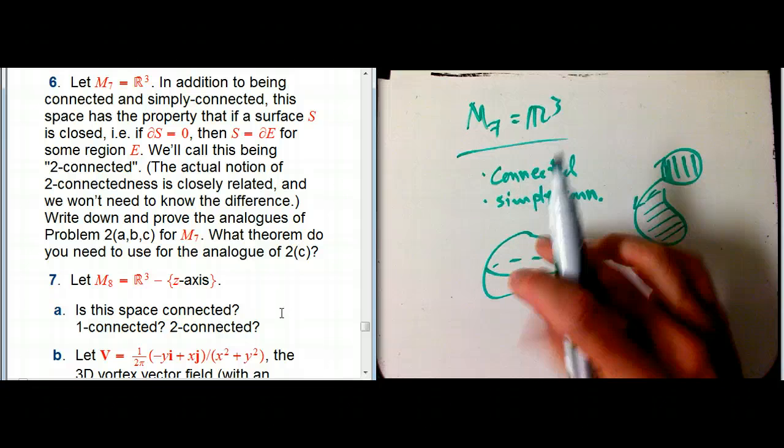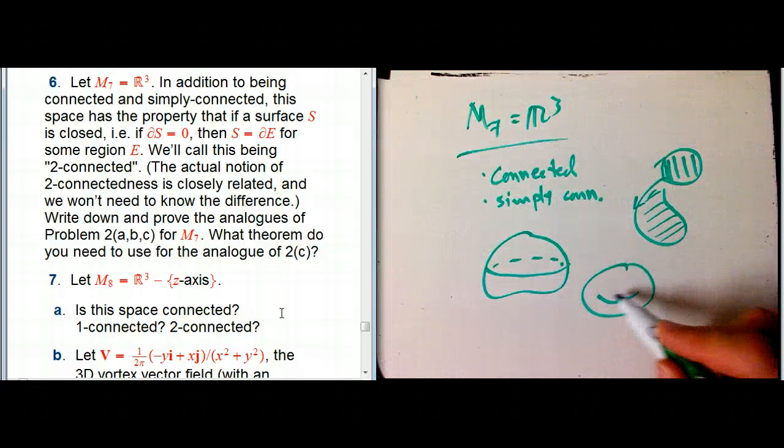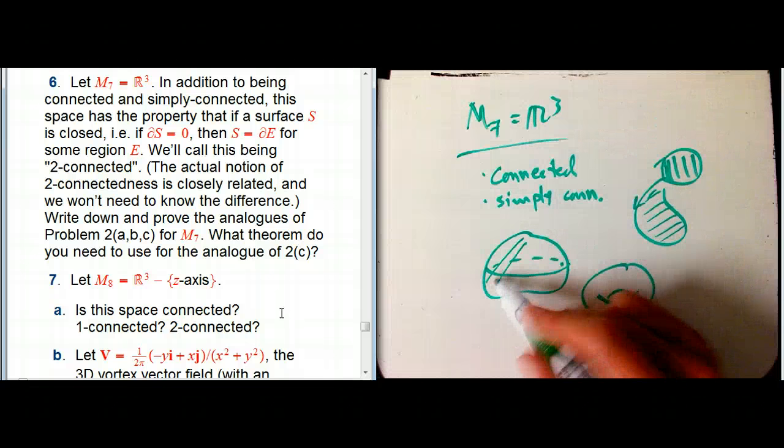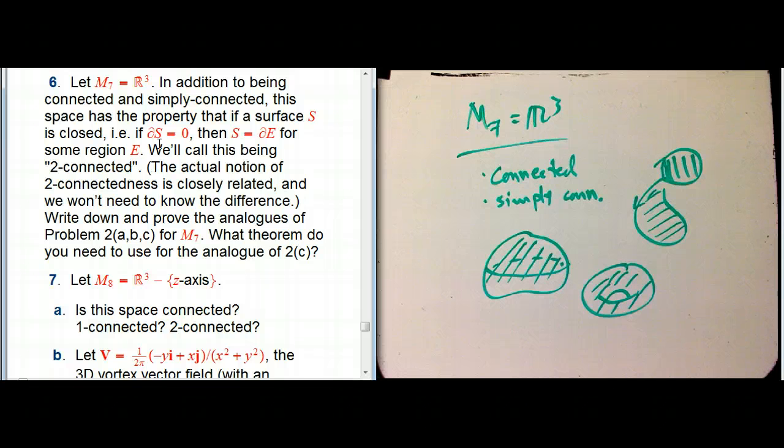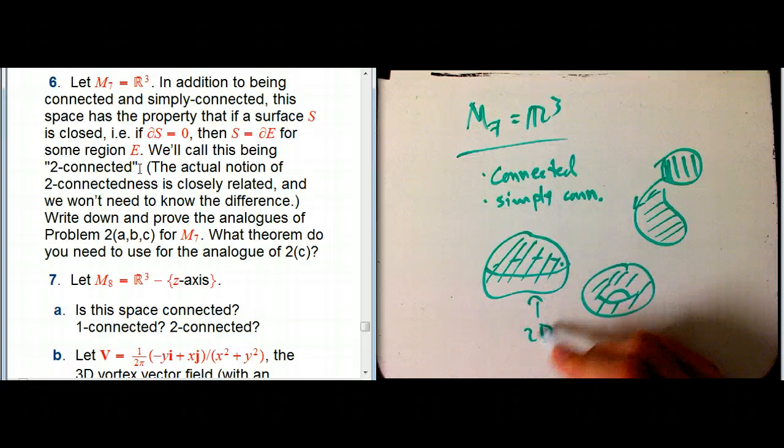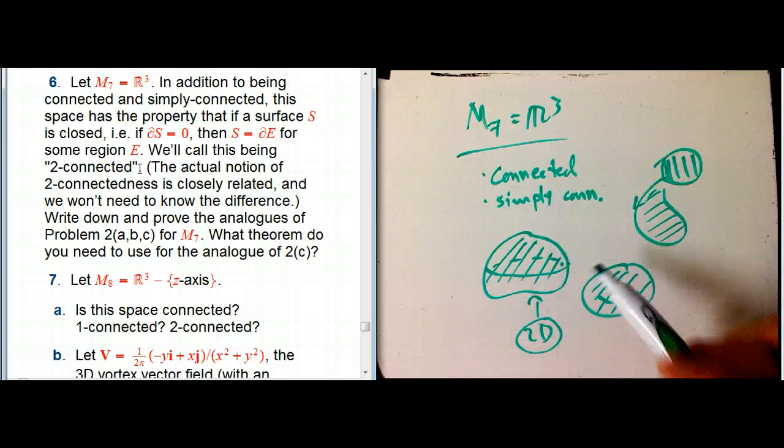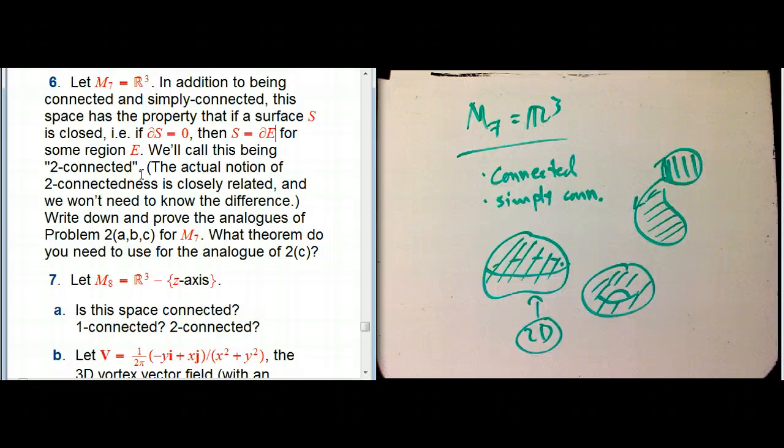But it's also true that if you take a two-dimensional blob that is itself closed, so it has no edge, like a sphere, or just like a lumpy sphere, or even maybe like a torus, then you can fill in in a three-dimensional fashion, so that that is the boundary of something. In other words, very similar to what we were saying before, if the boundary of a surface is zero, then that surface is the boundary of a region. We'll call this being two-connected.